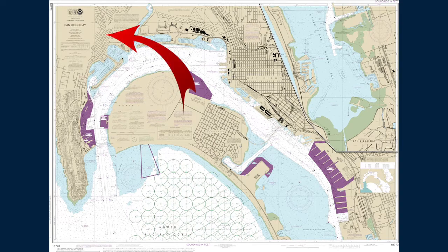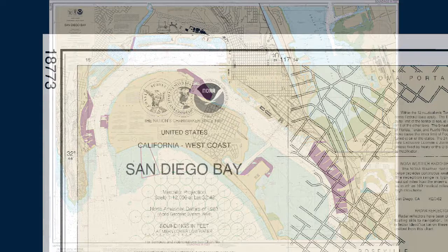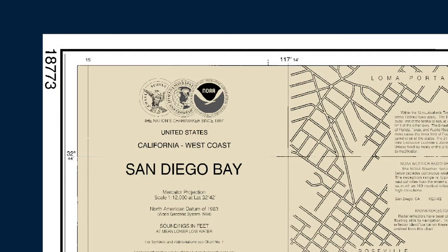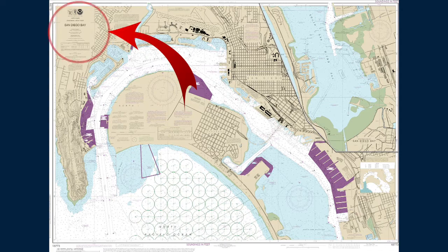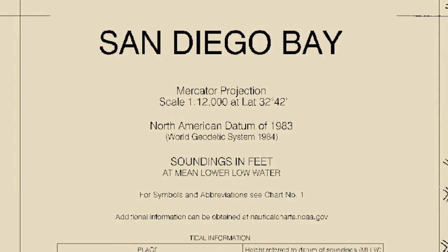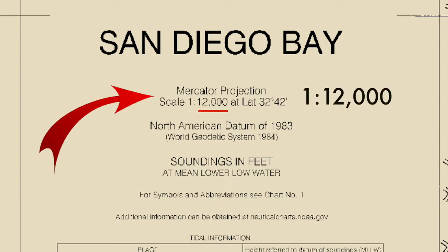Let's look at the upper left-hand corner of the chart. This is where the title of the chart is located. It tells us that the chart covers San Diego Bay in California on the west coast of the United States. This information is located in the least important part of the chart — in this case, over the light brown area that depicts land. Also located in this area is the scale of the chart. In this case, it is 1 to 12,000.